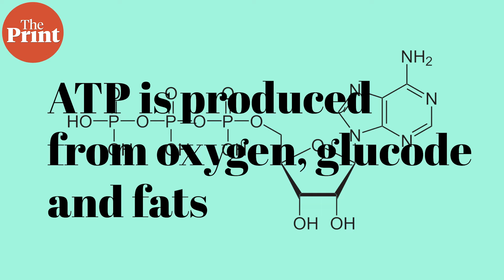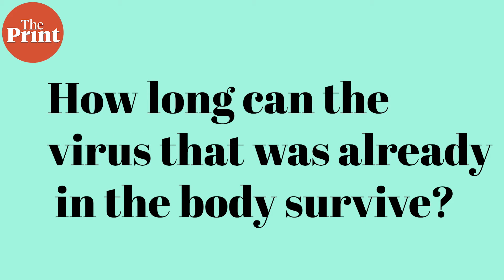ATP is produced from glucose and fats, which come from the food we digest, and oxygen, which is carried by the blood pumped by our heart. So as soon as our heart stops, fresh oxygen supply to our cells is cut off and they can no longer make the ATP that the virus requires. The question that then arises is: how long can the virus that was already in the body survive?